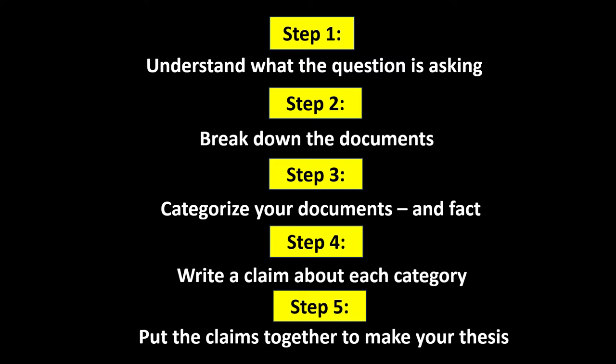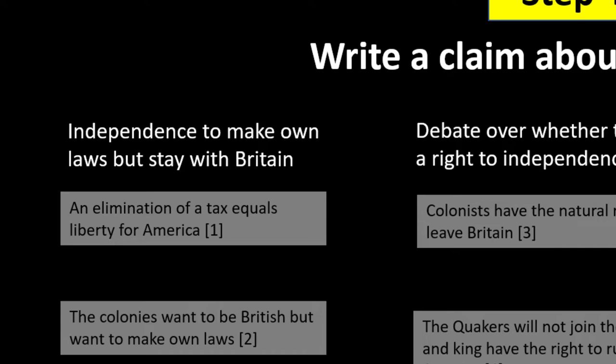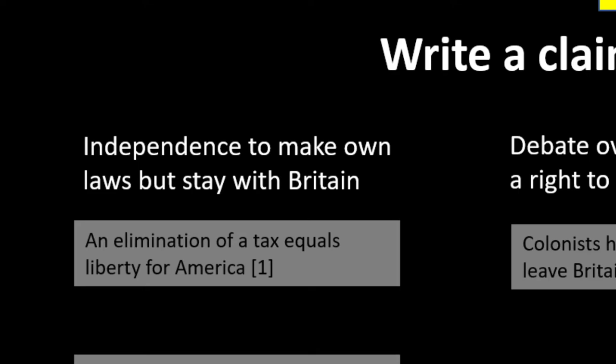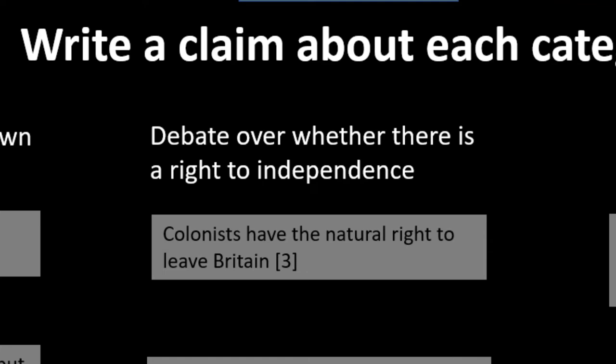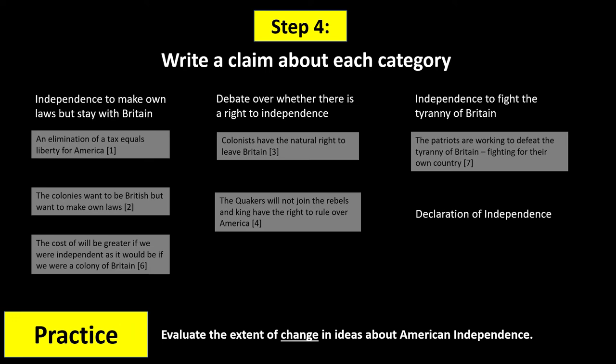Step 4: Write a claim about each category. We're going to write a one-sentence claim that helps show change in the ideas of American independence. For Documents 1, 2, and 6, I make the claim that early in the process, the Americans wanted independence to make their own laws but wanted to stay with Britain. For Documents 3 and 4, there will be debates over whether there is a right to independence. For Document 7 and the fact of the Declaration of Independence, they wanted full independence and wanted to fight the tyranny of Britain.